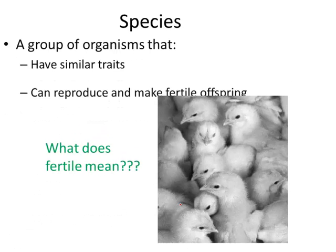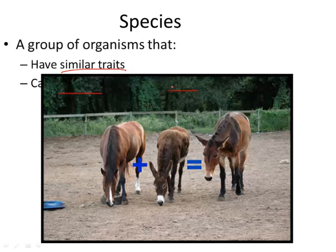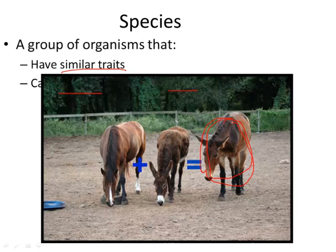A species is a group of organisms that have two things: similar traits, and the ability to reproduce and make fertile offspring. This last part is key — you have to be able to have children and have those children make more children. For example, a mule is made from a female horse and a male donkey. A mule is not considered a species because it cannot have children itself, so horses are a separate species from donkeys.